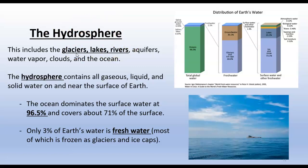The hydrosphere contains all the gases, liquids, and solid water on or near the Earth's surface. Our ocean dominates surface water at about 96.5% and covers about 71% of the surface of the Earth. About 3% of the water on Earth is fresh water, and most of it is frozen as glaciers and ice caps, which are quickly declining as global temperatures increase.